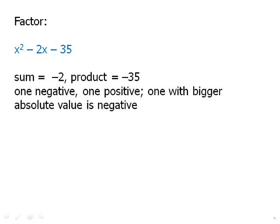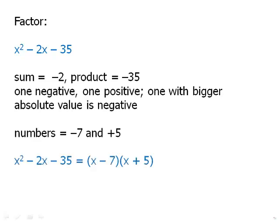So, what can we multiply to get 35, first of all? Well, one obvious choice is 5 times 7. So, let's make the one with the bigger absolute value negative. So, we'll have positive 5 and negative 7. They multiply to -35 and they add to -2. So, these are the numbers that we need and we can factor it into (x - 7)(x + 5).